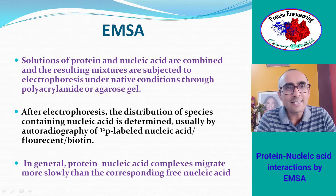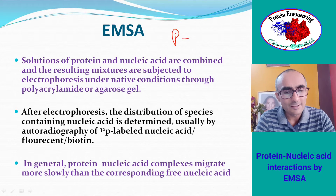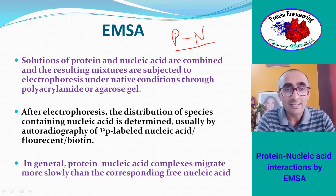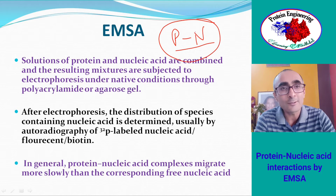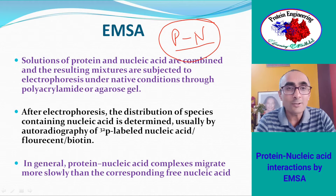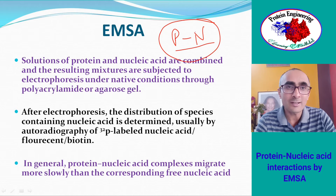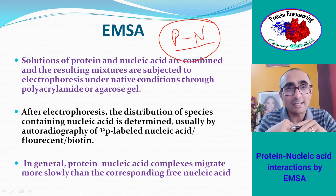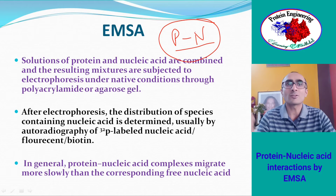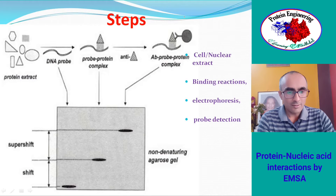In EMSA, a solution of protein and nucleic acid are combined together. The protein and nucleic acid form a complex of high molecular weight. As a result, when you run electrophoresis under native (non-denaturing) conditions, the protein-nucleic acid complex migrates more slowly compared to the nucleic acid alone. That is why EMSA is also known as a gel retardation assay — because the high molecular weight complex between protein and nucleic acid moves slowly in electrophoresis.